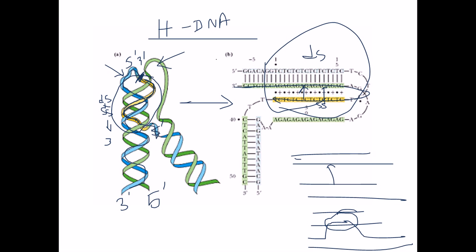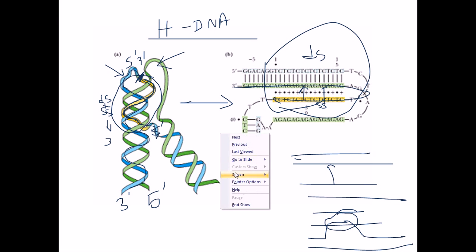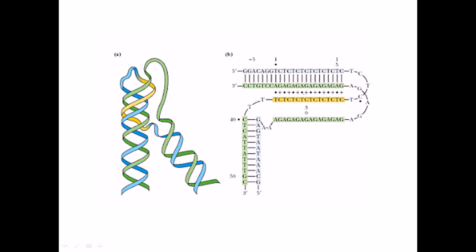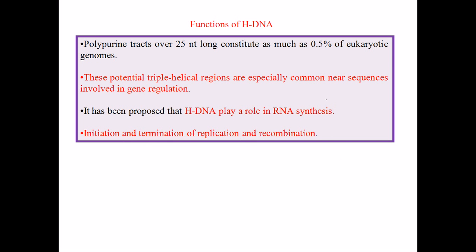There are key requirements for making H-DNA. First, it involves intra-strand interactions. Second, there must be a bend in the DNA structure. Third, it is not found throughout the whole DNA but only in particular stretches. Fourth, we need polypurine residues — AG AG AG — and on the opposite strand, polypyrimidine residues, interacting together to make this structure. Without polypurine and polypyrimidine sequences, this kind of DNA cannot be formed.